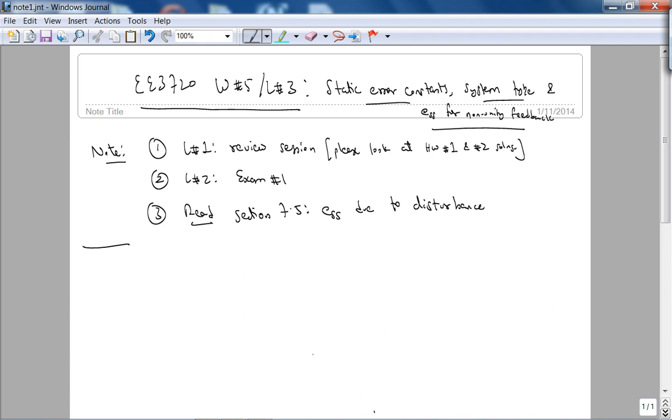Okay, so this is EE 3720 week 5 lecture 3. Today we're going to finish chapter 7, covering static error constants, system type, and steady state error for non-unity feedback.